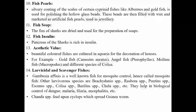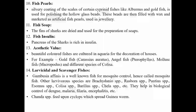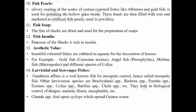The fourteenth point is larvicidal and scavenger fishes. Many fishes are used for control of mosquito larvae. One of the most important is Gambusia affinis, hence called mosquito fish. Other larvivorous species are Brachydanio species, Rasbora species, Puntius species, Esomus species, Colisa species, Barilius species, Chela species, etc. They help in biological control of Dengue, Malaria, Filaria, Encephalitis, etc. Chanda species feed upon cyclops which spread guinea worm.